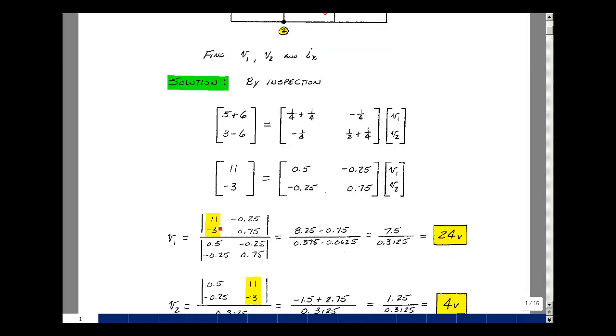Okay, so I have 11 times 3 quarters, that's 8.25, and then a minus, a minus 3 times minus 0.25. So the two minus signs cancel. I have a third minus sign, so 0.75. That difference turns out to be 7 and a half.